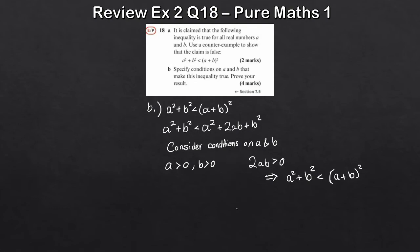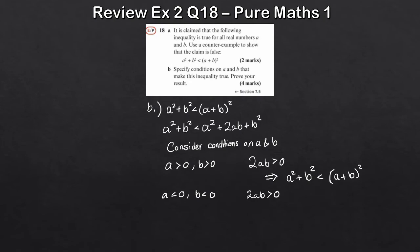Now let's consider when both are negative — A less than 0 and B less than 0. A times B: a negative times a negative gives a positive, and times 2 gives a positive result. So 2AB is greater than 0. We repeat the same conclusion: because 2AB is positive, the right hand side is bigger, so A squared plus B squared is less than A plus B, all squared.